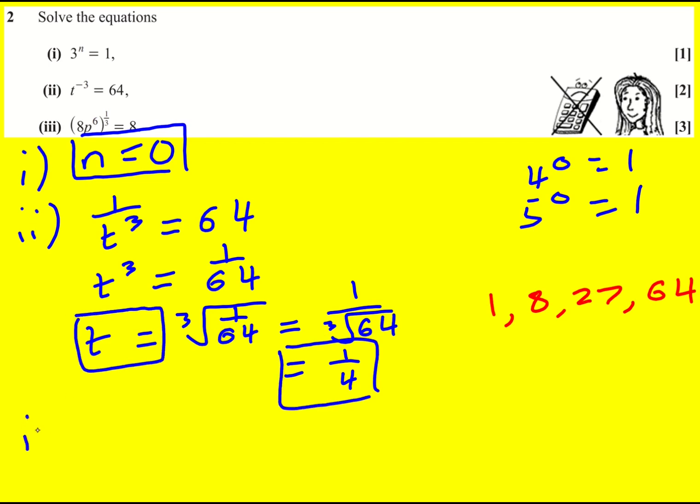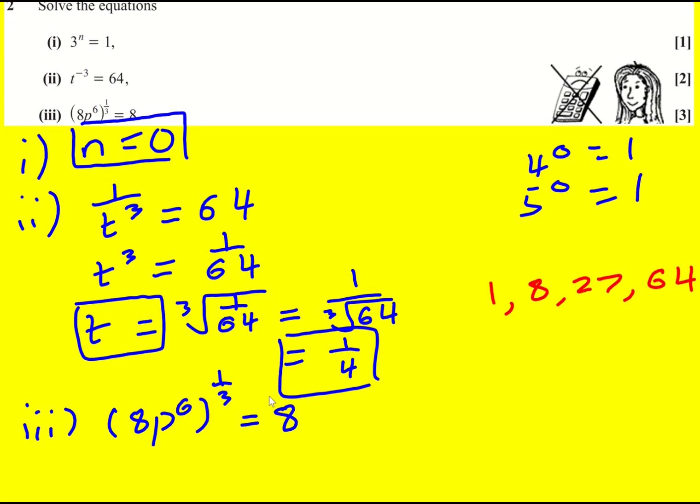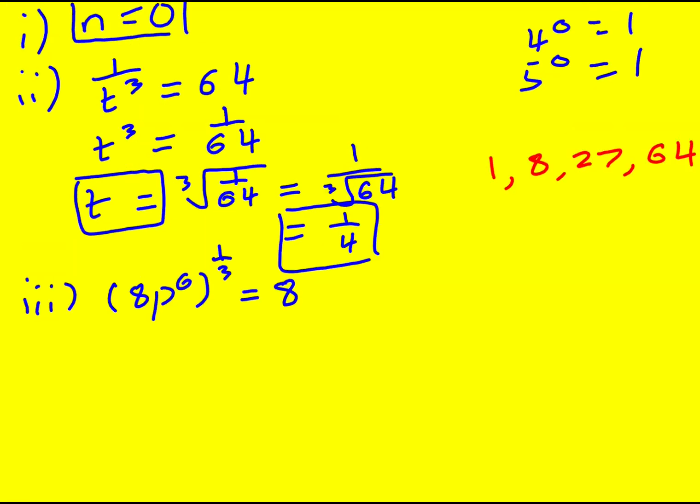Okay, finally, we've got this question here: 8p to the 6 to the power of a third equals 8. Now what I can do is I can actually raise the 8 to the power of a third and the p to the 6 to the power of a third, and set that equal to 8.